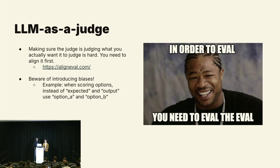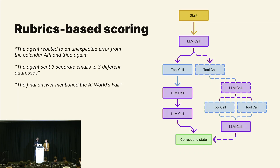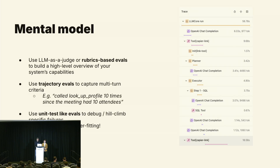We're also leaning into LLM as a judge: using an LLM to grade or compare results from your evals. It's tempting to use them for everything, but you need to make sure the judge is judging correctly, which can be surprisingly hard. You also have to be careful not to introduce subtle biases. We've been experimenting with rubrics-based scoring, where each row in our dataset has a different set of rubrics handcrafted by a human, describing in natural language what specifically the LLM should pay attention to when scoring. For example: did the agent react to an unexpected error from the calendar API and then try again? To summarize: we use LLM-as-judge or rubrics-based evals for a high-level overview of system capabilities and benchmarking new models; trajectory evals to capture multi-turn criteria; and unit test-like evals to debug specific failures — but beware of overfitting.